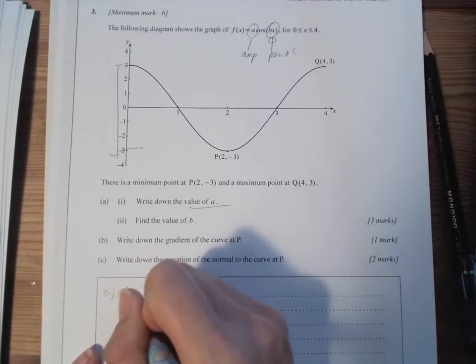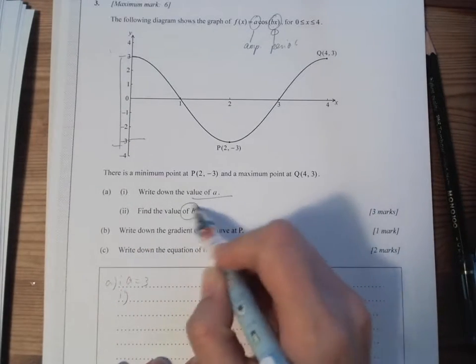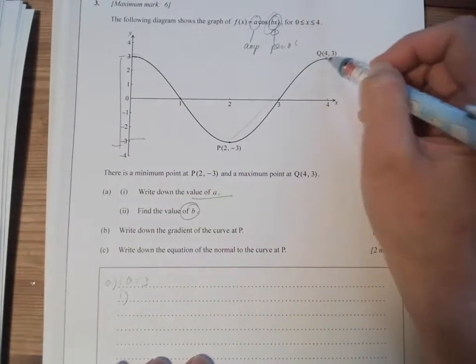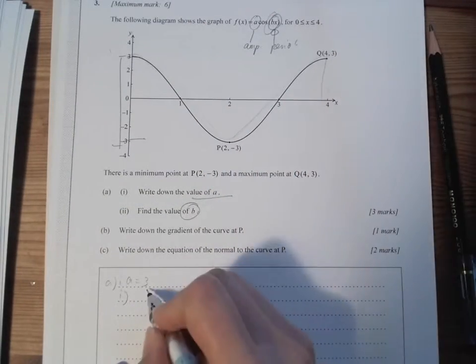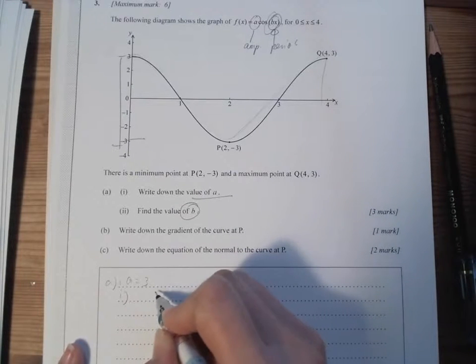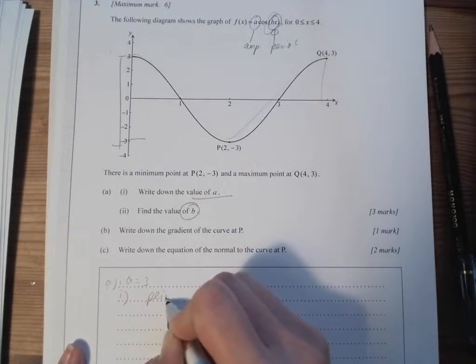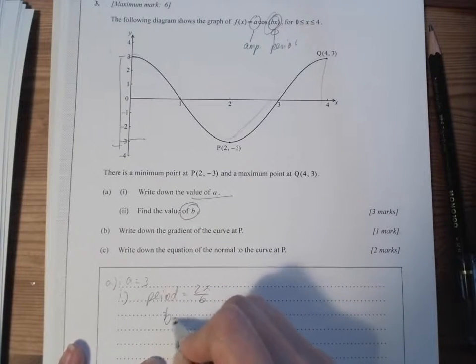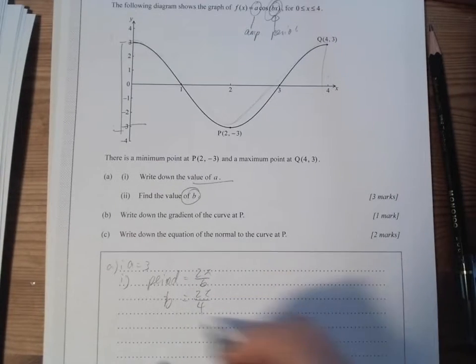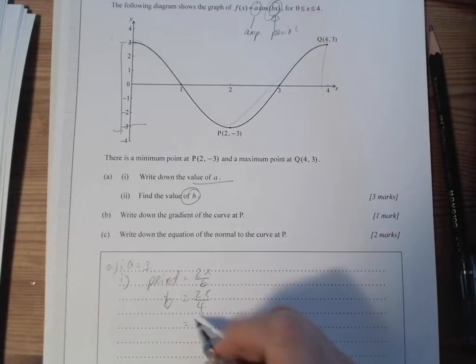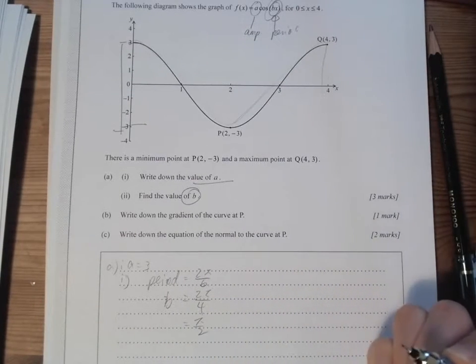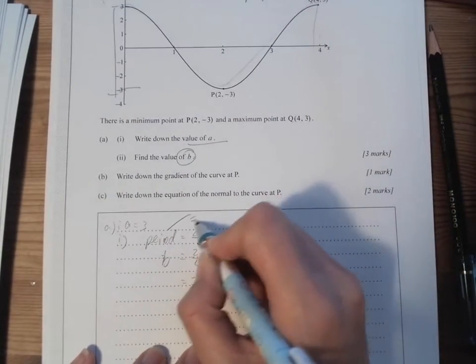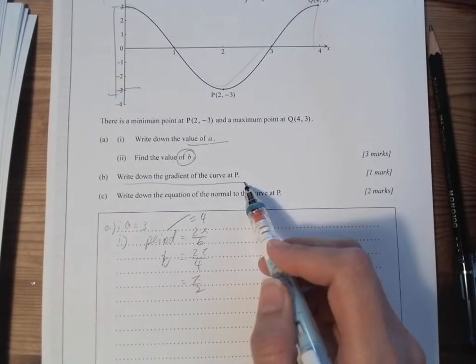And then the second bit, we will have B. B is like the period. We can see that from the top again back to the top is 4, so we have period equals to 2π over B. So we have B will be equals to 2π over 4, which means that we will have π over 2 as B, not period. Period is 4.